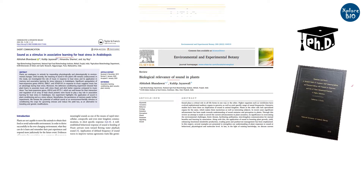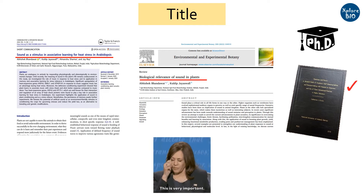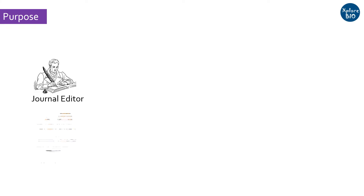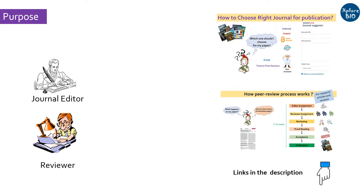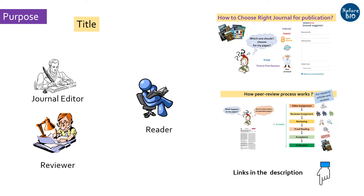Whether it is a research paper, a review or a thesis, choosing a suitable title is as important as the rest of the manuscript. The title is the first thing an editor or reviewer looks at when you are submitting your paper for publishing. Once published, the main purpose of the title is to capture the reader's attention and stimulate them to read the abstract and the entire paper. Titles are the most-read part, followed by the abstract, and only a few readers who find them interesting will go through the entire paper.